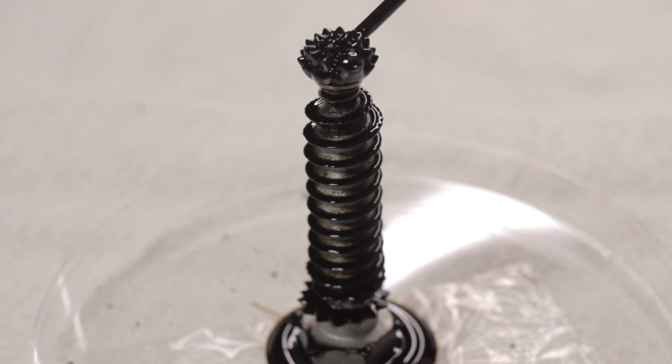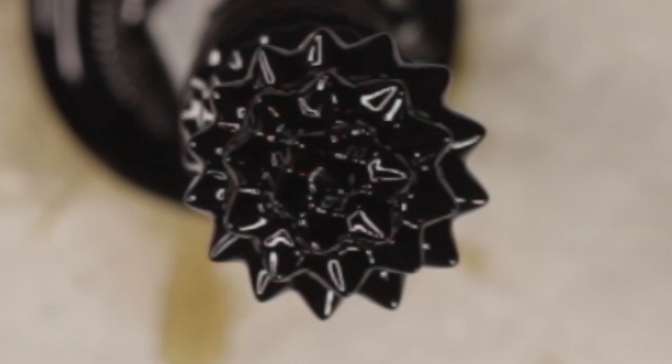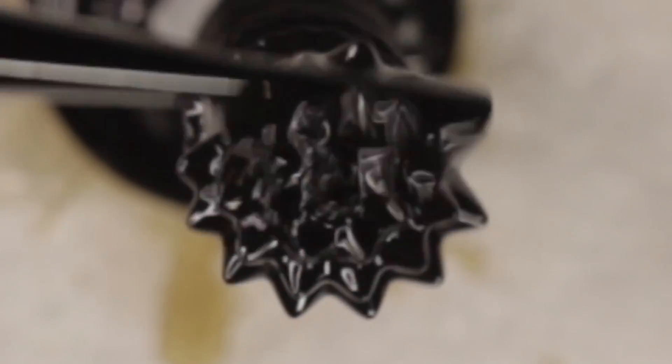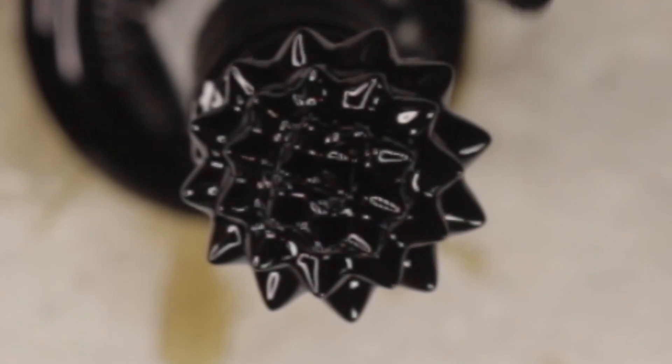The ferrofluid cannot be pushed off the surface of the screw or ball joint end. Instead of splashing off the surface, I just end up giving the magnetic tower a scalp massage with the pipette.